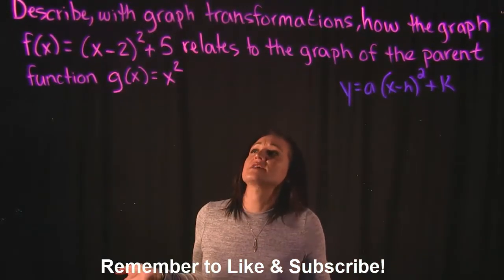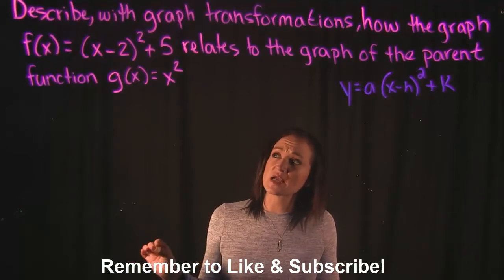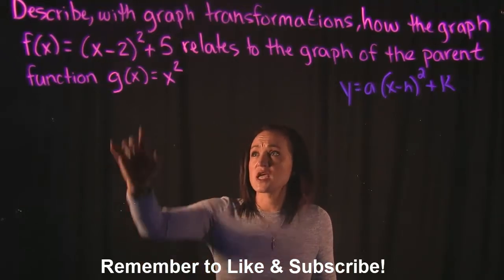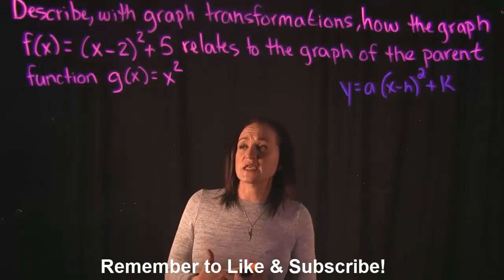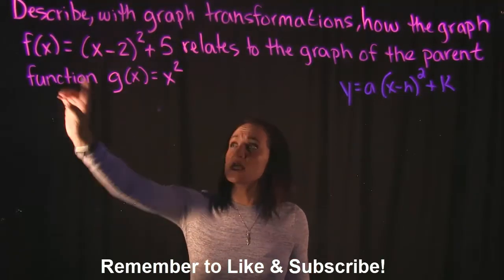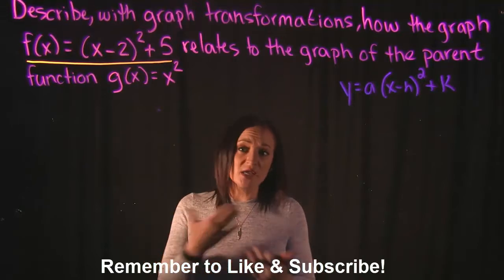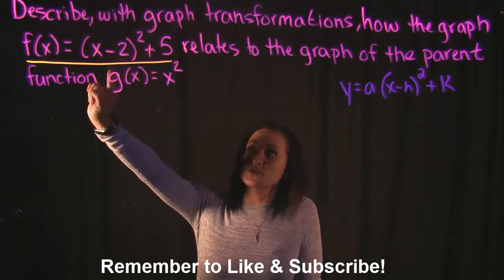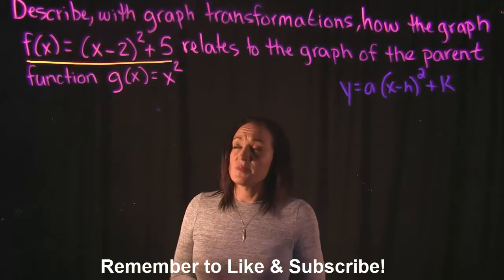For this video, our question is asking us to describe with graph transformations how the graph f of x equals x minus 2 squared plus 5 relates to the graph of the parent function g of x equals x squared. This problem is asking us, if we know information about the graph x squared and we look at the equation x minus 2 squared plus 5, what is the difference between the two graphs? From x squared to x minus 2 squared plus 5, how is it shifted?